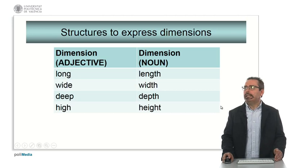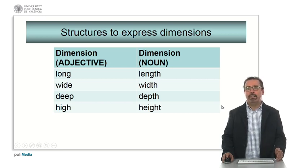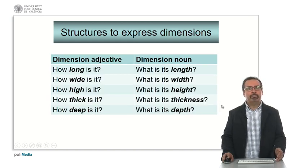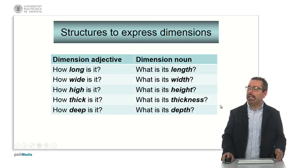In order to express dimensions in English, it's very important to use the correct word of the dimension, which can be an adjective or a noun. Here we have the four most typical ones. Long, which is the dimension expressed with an adjective. Length is the same dimension expressed with a noun. Wide, width. Deep, depth. High, height. This will serve us to make questions such as, how long is it? What is its length?